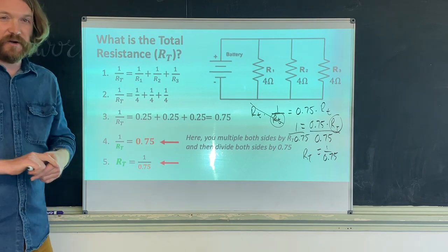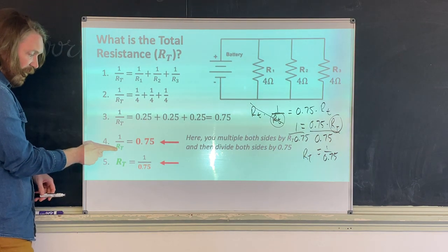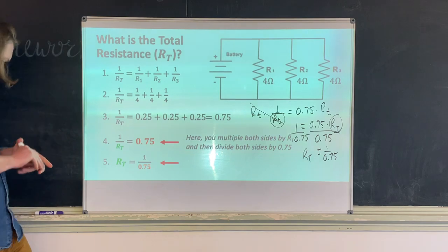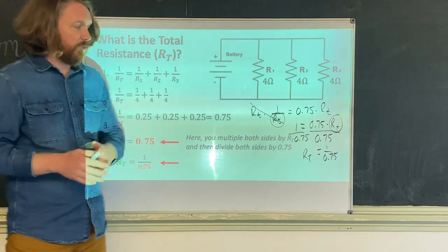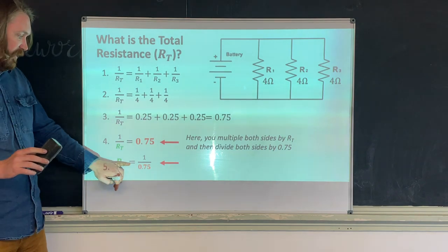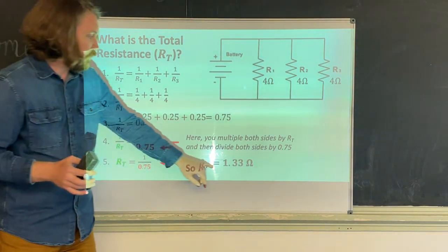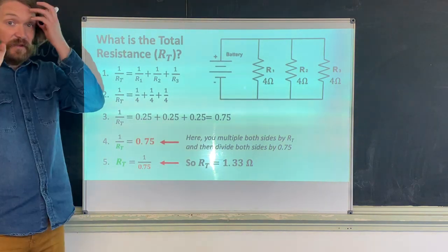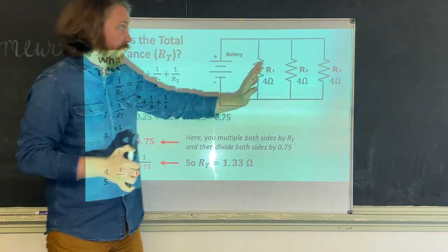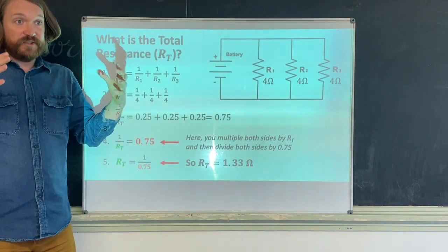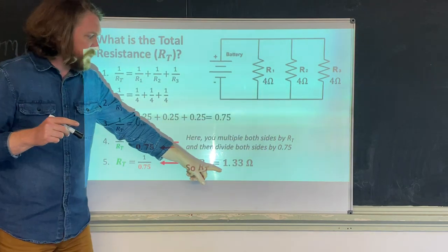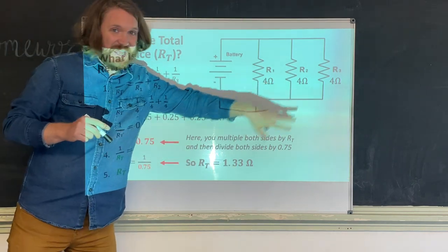This is sometimes called the butterfly method — you swap the RT from the bottom of one fraction to the top of the other side. So R_total = 1/0.75 = 1.33 ohms. Compare this to a series circuit: adding three 4-ohm resistors gives 12 ohms. In a parallel circuit, three 4-ohm resistors give only 1.33 ohms — less than any individual resistor.